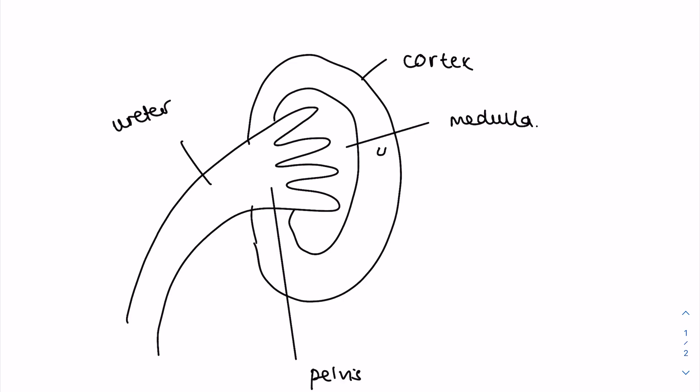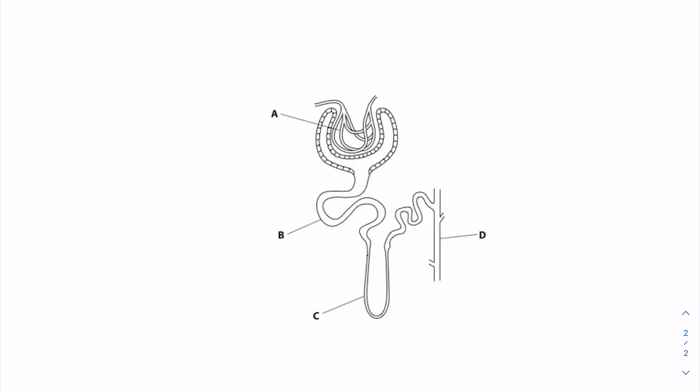In terms of where you'd find a single nephron, it looks a little bit like this. So I'm going to go into more detail, but hopefully you can see that characteristic Bowman's capsule going into the proximal convoluted tubule, the loop of Henle, and then the distal convoluted tubule.